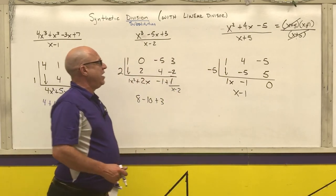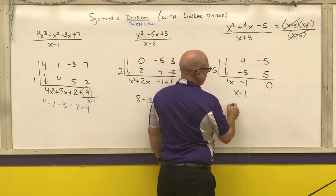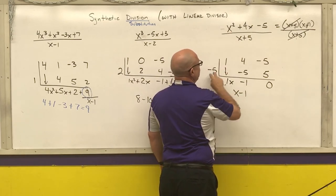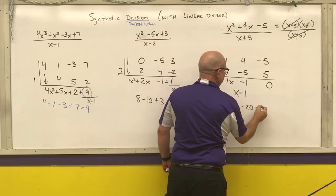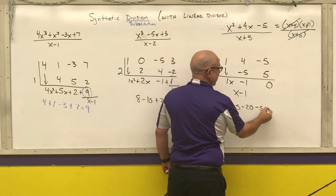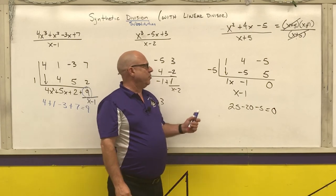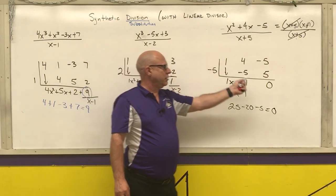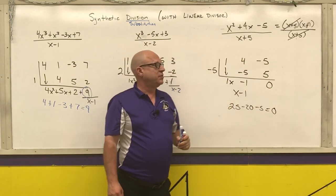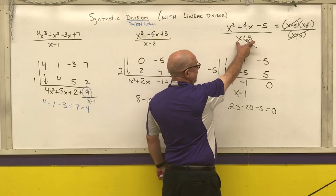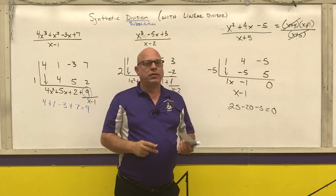If I put a negative 5 into my original equation: negative 5 squared is 25, negative 5 times 4 is negative 20, minus 5. 25 minus 20 minus 5 is, in fact, 0. So this is telling you that if I put a negative 5 into my original function, I have a 0 for my y-coordinate — that's an x-intercept. It's also telling me that if I divide by x plus 5, I'm left with x minus 1 with no remainder.